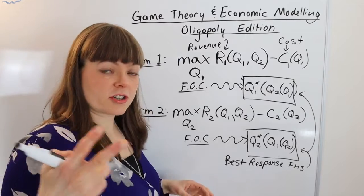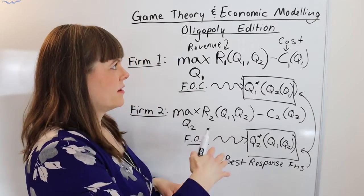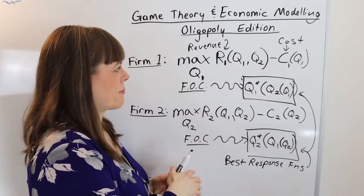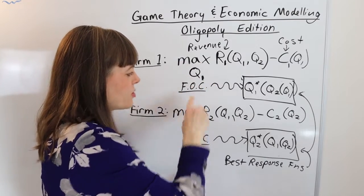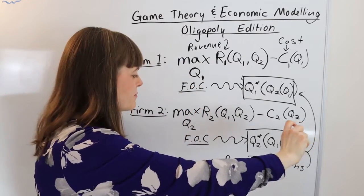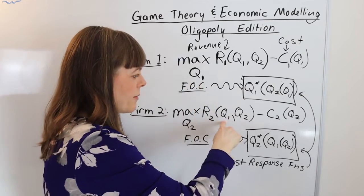So two features to look for when you're thinking about game theory and economic modeling: each player's choice variable is going to appear in the other player's objective function. Q1 appears down here, Q2 appears up here.